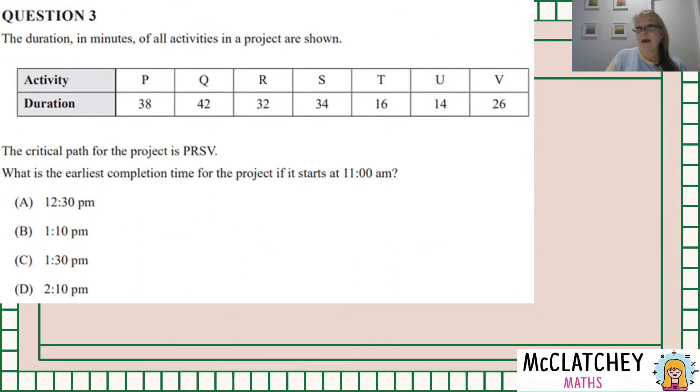This is for decision mathematics. Our first question, question three, the duration in minutes of all activities in a project is shown. So we've got seven activities, P, Q, R, S, T, U, V and their times that they took in minutes underneath. The question says to us the critical path of the project is PRSV. What's the earliest completion time if the project starts at 11am?